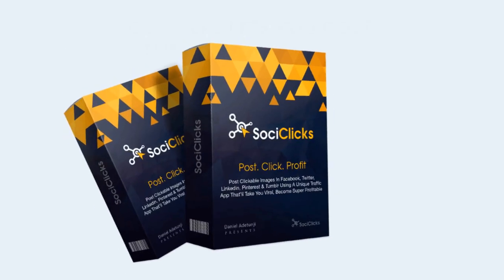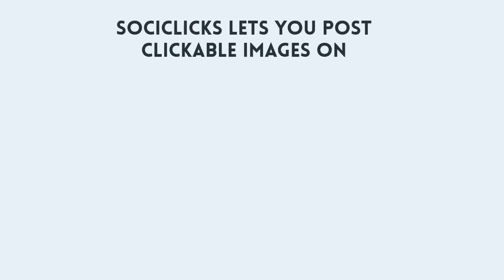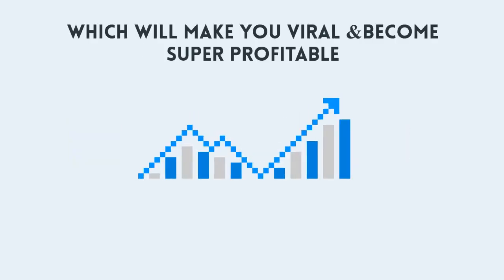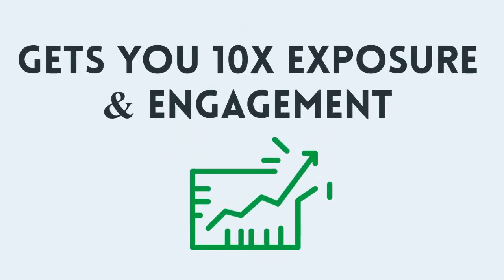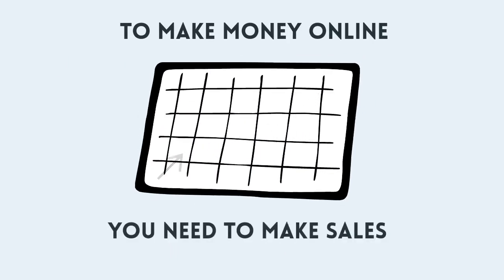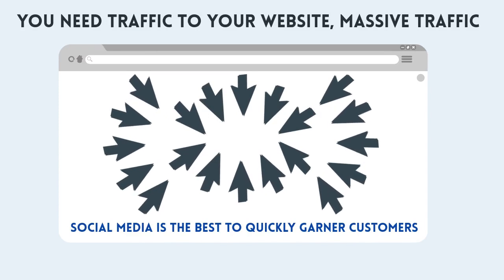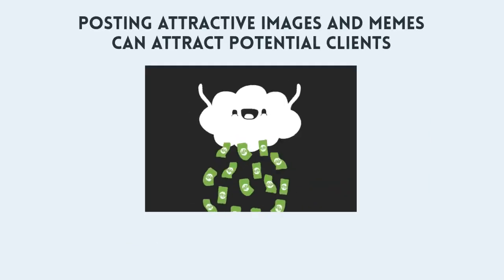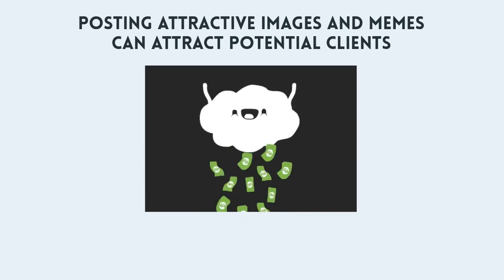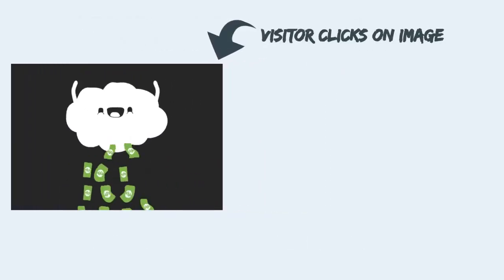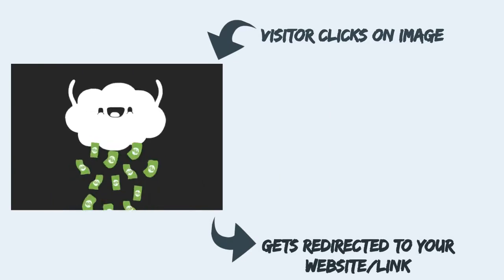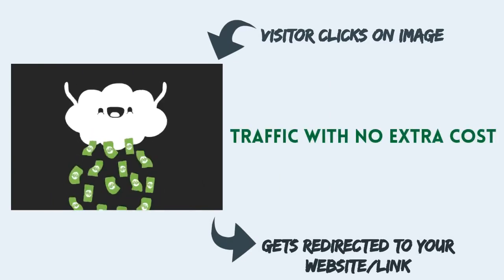SoCeClicks is a revolutionary platform that allows you to post clickable images in five social networks – Facebook, Twitter, LinkedIn, Pinterest, and Tumblr – which will in turn take you viral, become super profitable, and get you 10 times exposure and engagement. To make money online, you need to make sales, and to achieve this you need traffic to your website. Massive traffic from social media is the best way to quickly garner customers. Posting attractive images and memes can attract potential clients, and when your images are clickable, visitors will be redirected to your website or choice of destination — traffic with no extra cost.